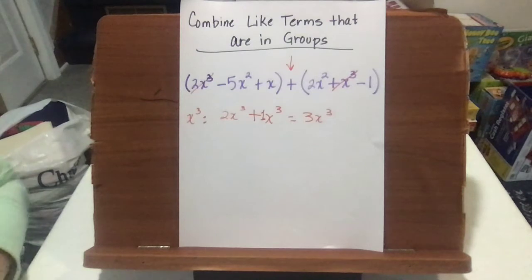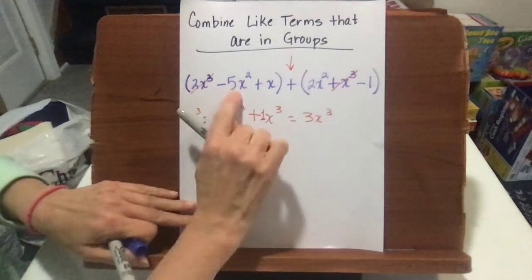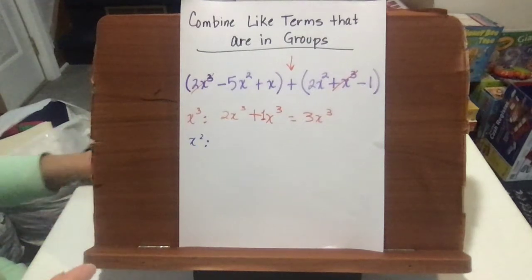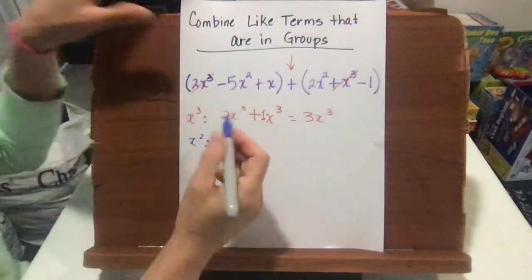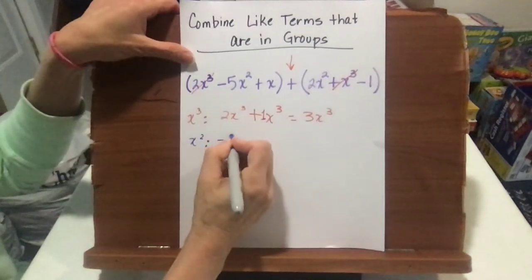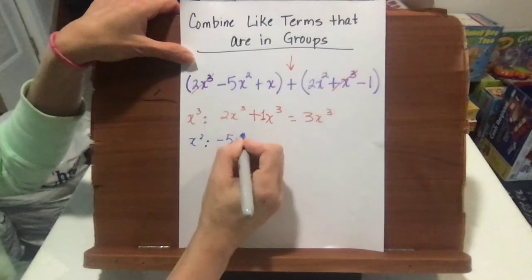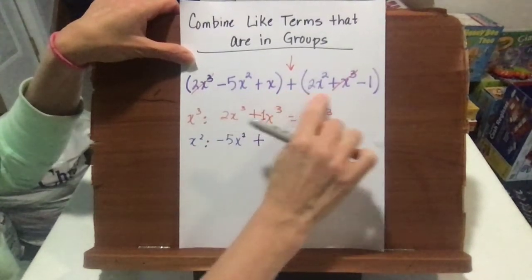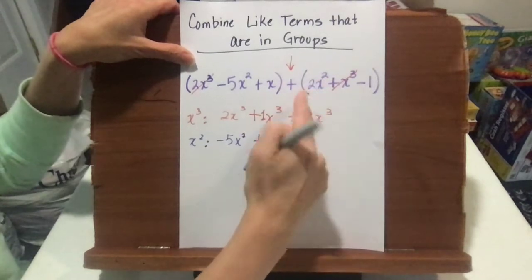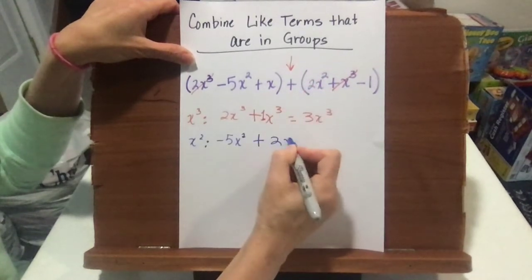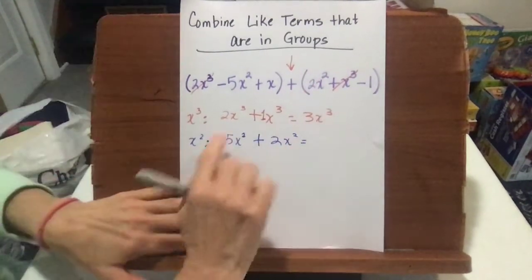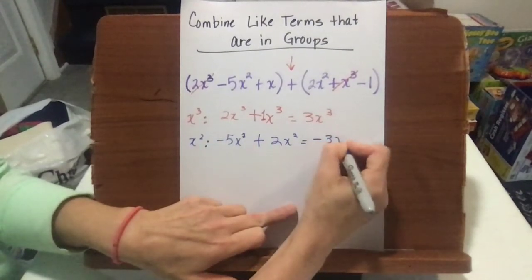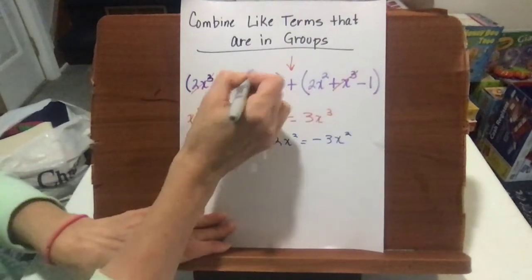Next, we're going to look at the x squared terms. We have a negative 5x squared, and we're going to add it to a 2x squared that we have in the second group. Negative 5 plus 2 is negative 3x squared, and we can cross those out.